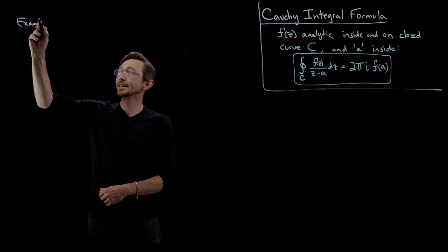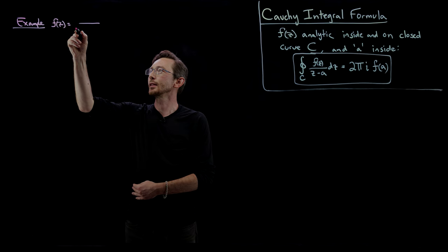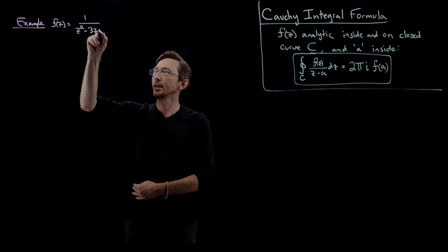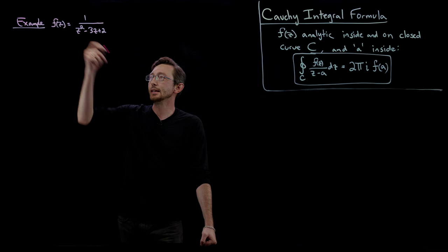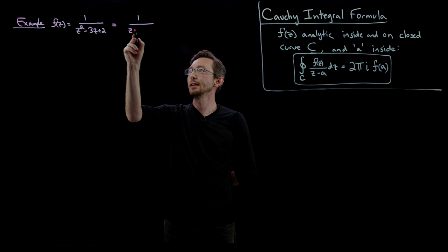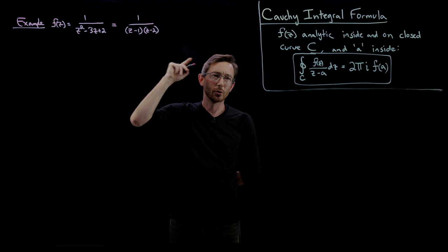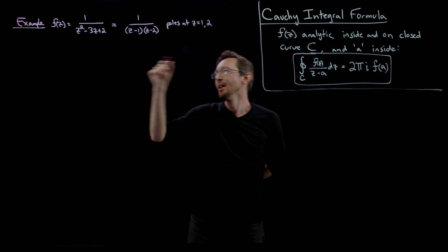This is essentially just an example of how to use the Cauchy integral formula. So let's say we have a function f of z equals one over z squared minus three z plus two. I'll probably post a link to the PDF on these videos. We can factor this denominator into one over z minus one times z minus two. So we say that this function has singularities or poles at z equals one and two.